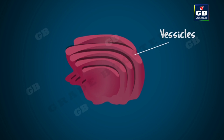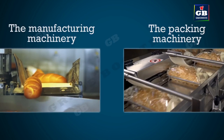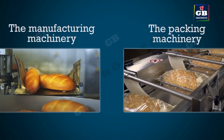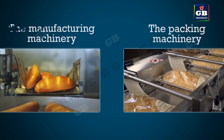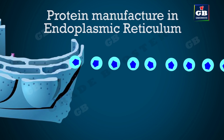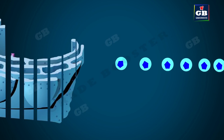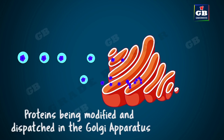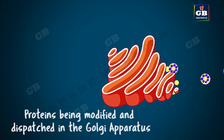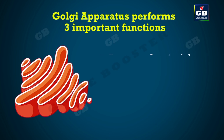The Golgi apparatus looks like flattened bags or vesicles arranged parallel to each other, forming stacks called cisterns. Just like a factory has separate machines for manufacturing and packing, in our cells proteins are manufactured in the endoplasmic reticulum and then sent to the Golgi apparatus for modification, packing, and dispatch. The proteins are modified, stored, and when needed are packed and dispatched in the form of vesicles.